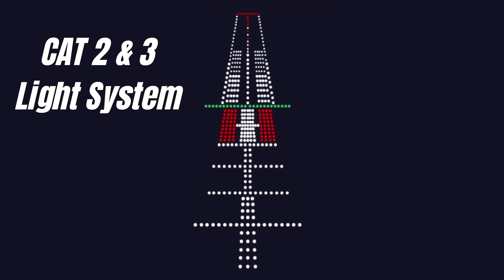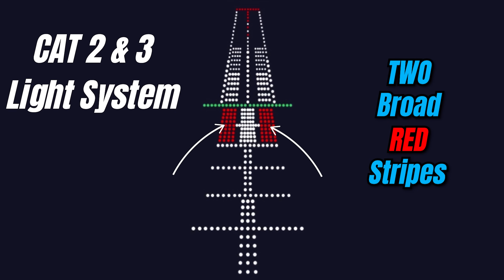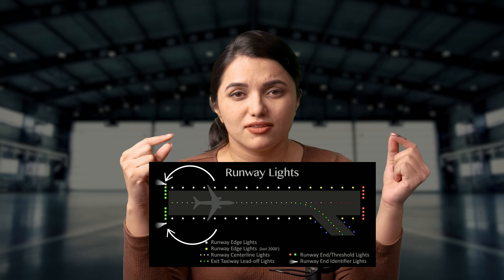Category 2 and 3 approach light systems are used in low visibility conditions at airports like Delhi or Bangalore in India. In addition to white and red lights, there will be two broad red stripes toward the end of the approach lights, very close to the threshold, indicating that the runway is approaching. This system is very complex and is used for pilots to identify the runway when visibility is really low — down to around 75 meters.